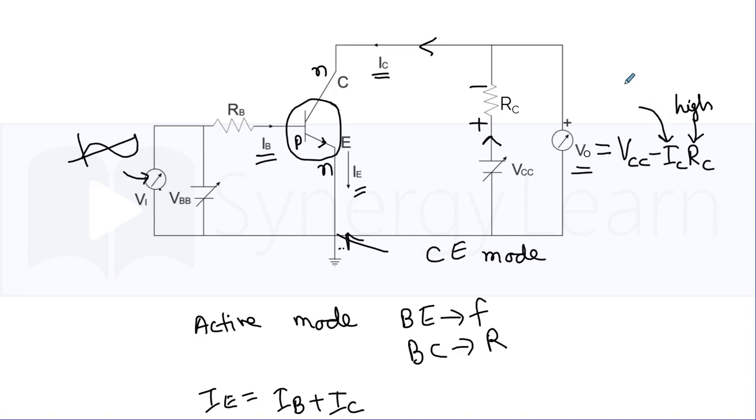Now when the input is in positive cycle, it adds to the forward biasing of base-emitter, and therefore the collector current will increase because as the forward biasing increases...